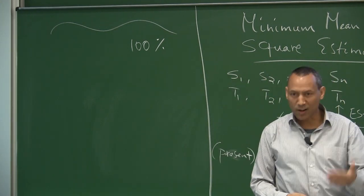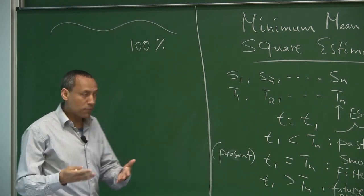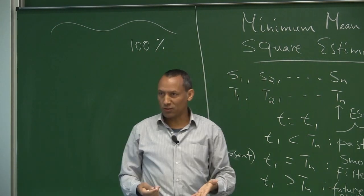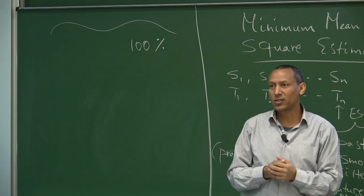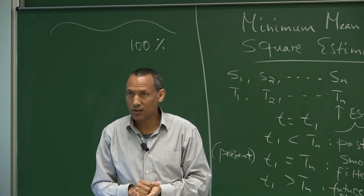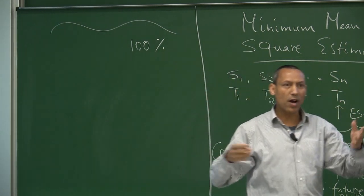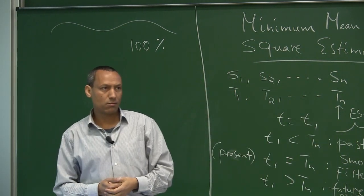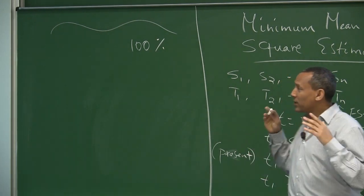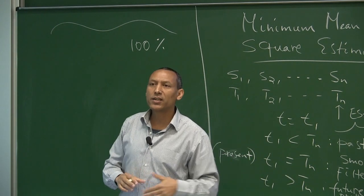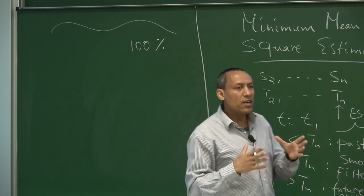There is no such thing as a device that can measure the temperature with 100% accuracy. We approach reality through our endeavour to estimate it, but we will never be able to touch it. Even at the quantum level, our capacity to grasp reality is limited by Heisenberg's uncertainty principle. As we move away from the quantum realm into the macro realm, our uncertainty of course increases, so we always include error into our estimation.